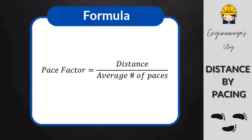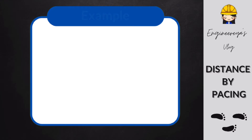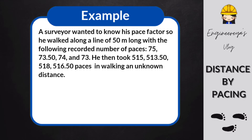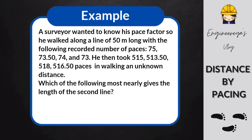Pace factor is equal to the distance or length divided by the average number of paces. Let's have an example. A surveyor wanted to know his pace factor, so he walked along a line 50 meters long with the following recorded number of paces: 75, 73.50, 74, and 73. He then took 515, 513.50, 518, and 516.50 paces in walking an unknown distance. Which of the following most nearly gives the length of the second line?